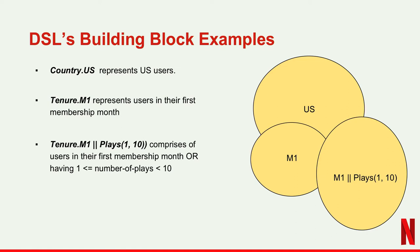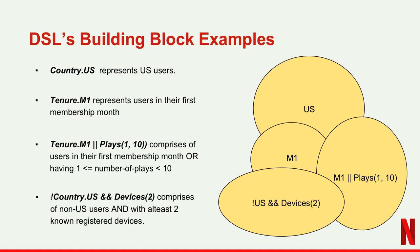You can use these building blocks to carve out more user cohorts. For example, you can combine tenure.m1 with an OR condition on place 1–10, indicating all users who have had a number of plays between 1 to 10 in the last day. You can mix and match like this — we support all Boolean operations. For example, all users who are not from the US but also have had at least two devices registered on them. Using this DSL, a developer can construct whatever user cohort they want and then build a training set out of it.